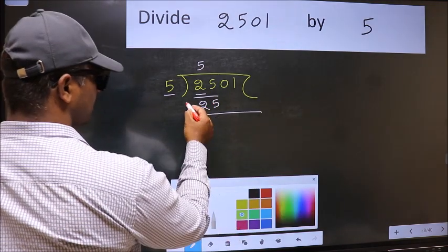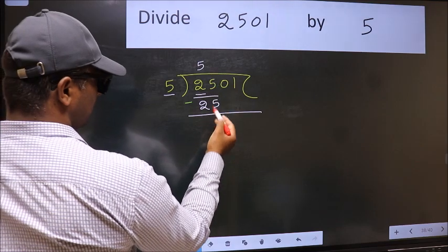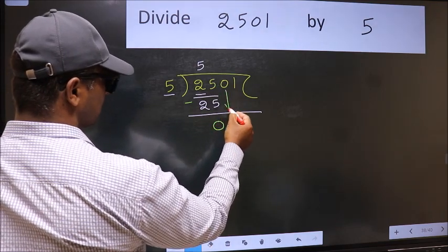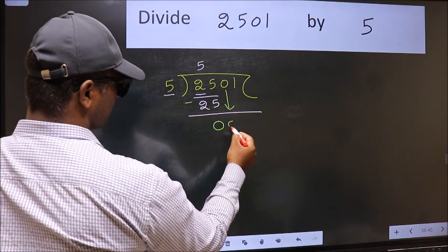Now we should subtract. 25 minus 25 is 0. After this, bring down the beside number, so 0 down.